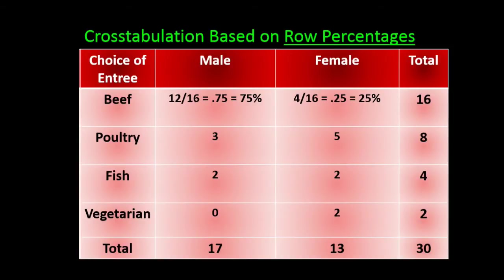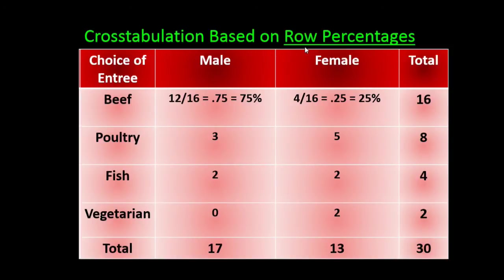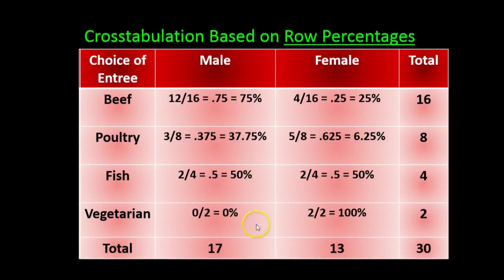We can do that for the rest of the table as well. We take each of these cell numbers and divide by their row total — because this is a cross tabulation based on row percentages. For poultry: 3 divided by 8 for males, and 5 divided by 8 for females. For fish: 2 divided by 4 for males, and 2 divided by 4 for females. This gives us a cross tabulation based on row percentages.